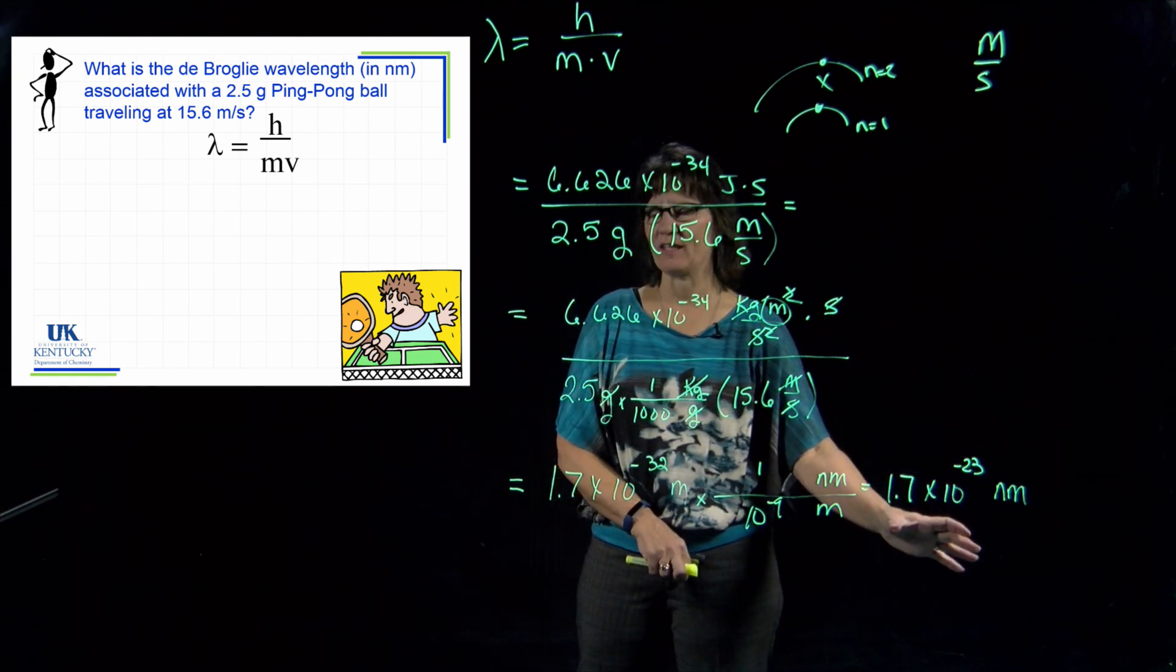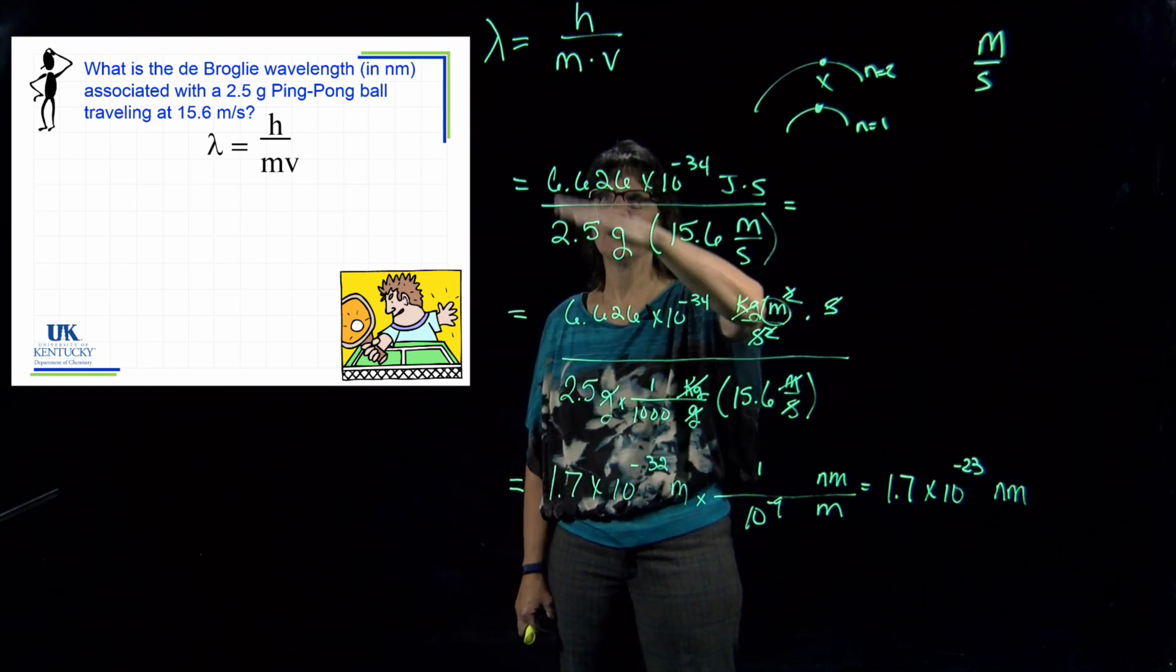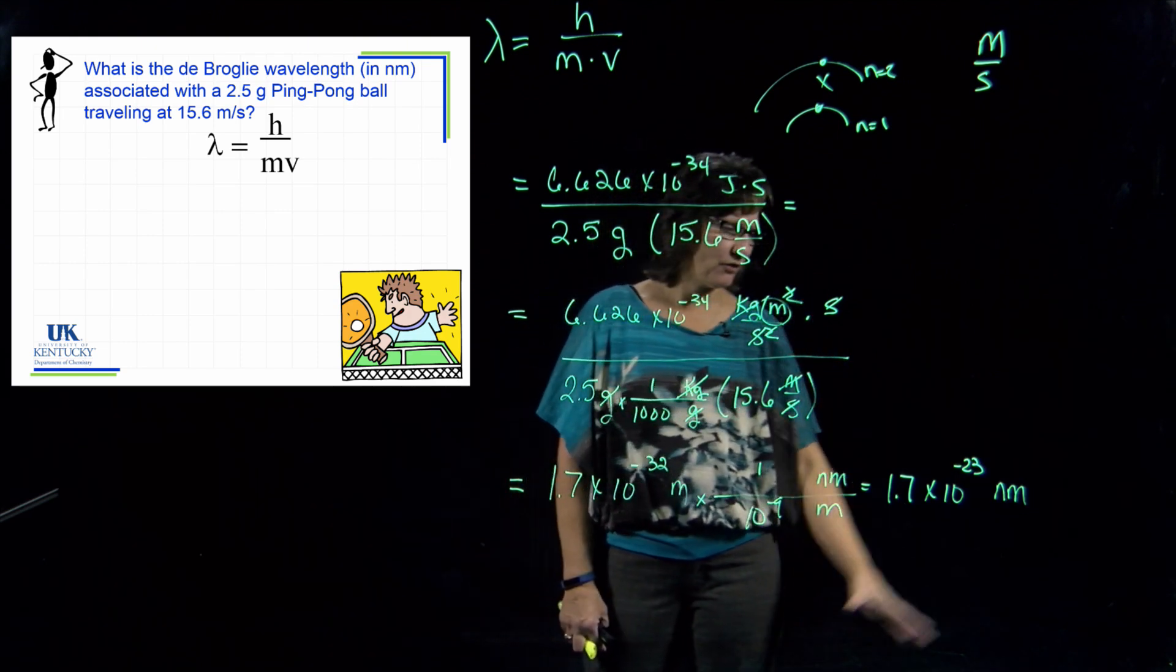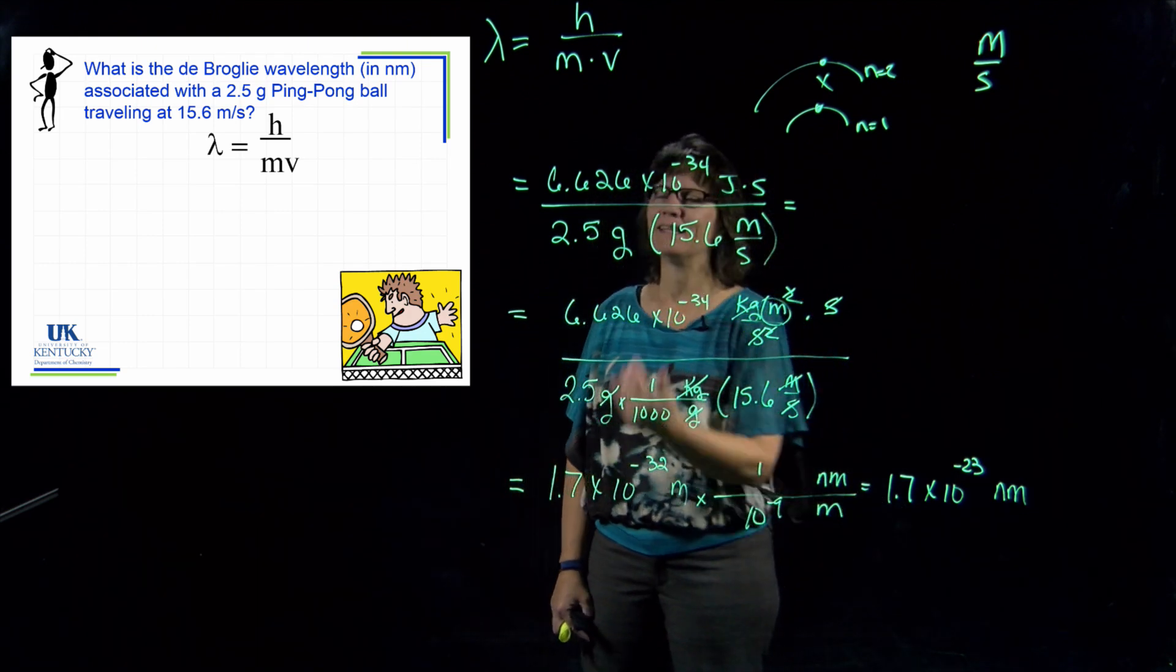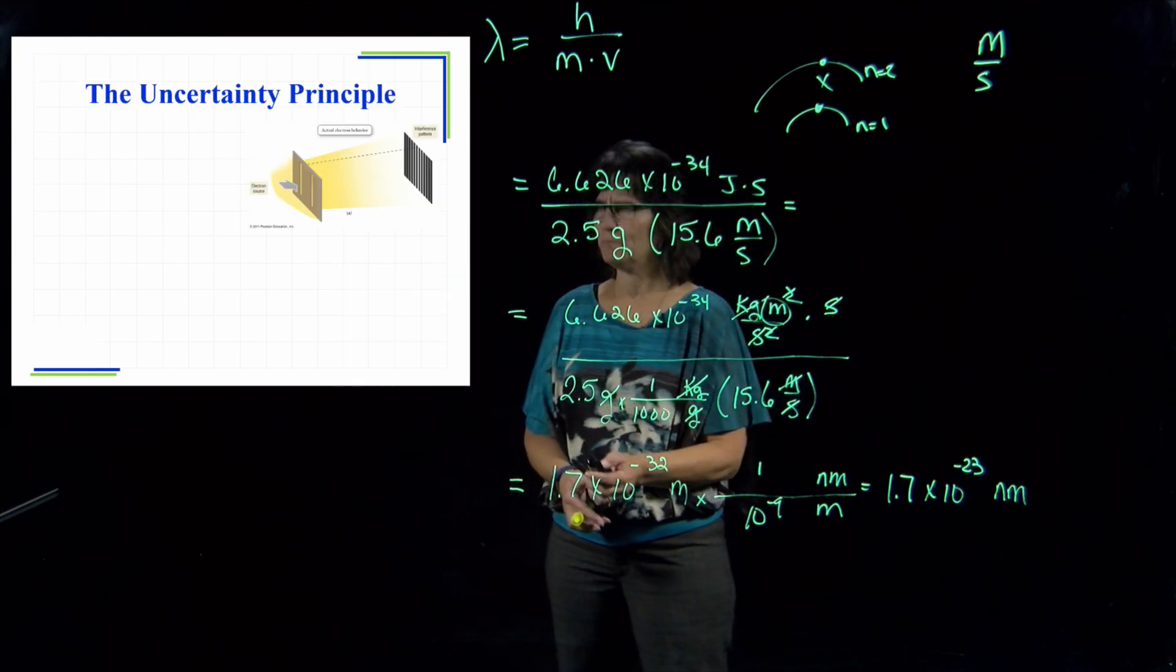So this is ridiculously small. So while a ping pong ball can have a calculatable wavelength according to its mass, it's way too tiny to pick up on that and actually see a wavelength with a particle that's that big. But when you start talking about very small particles like electrons, where we're dividing by a very tiny mass, then we start getting wavelengths that are more reasonable and measurable. So you'll never measure a wavelength of a ping pong ball, but it is possible to measure and see the diffraction and the wavelengths for a particle.